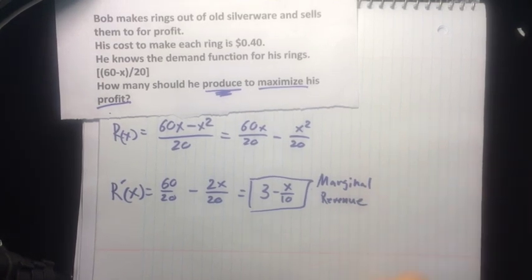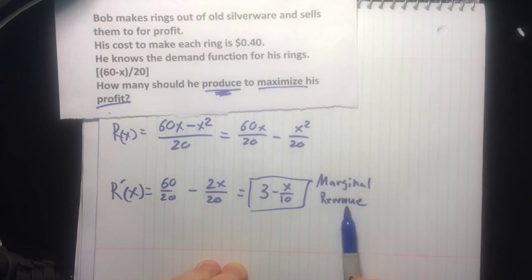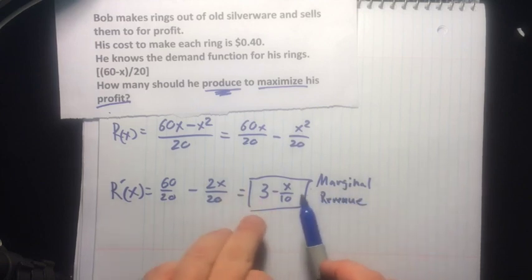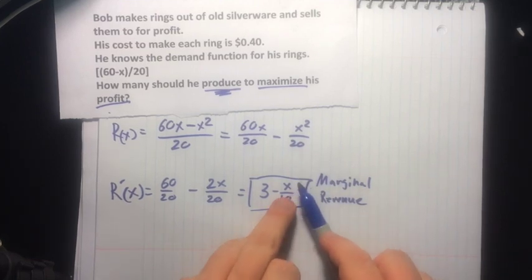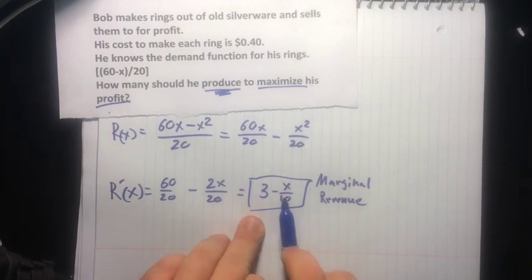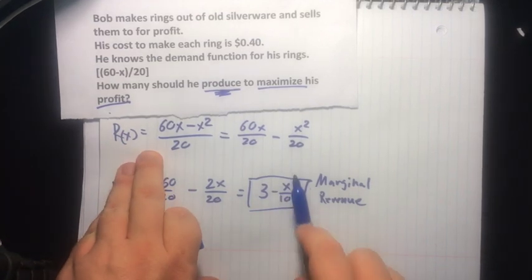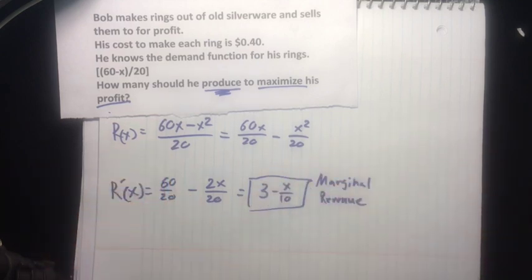Marginal revenue. And that's just their way of saying R', or the revenue you'll get for just one more unit. One more. You increase x by 1, this is what you should get, because this is the slope of our revenue function at a given x. And that gives you a good idea of where that line is going next.